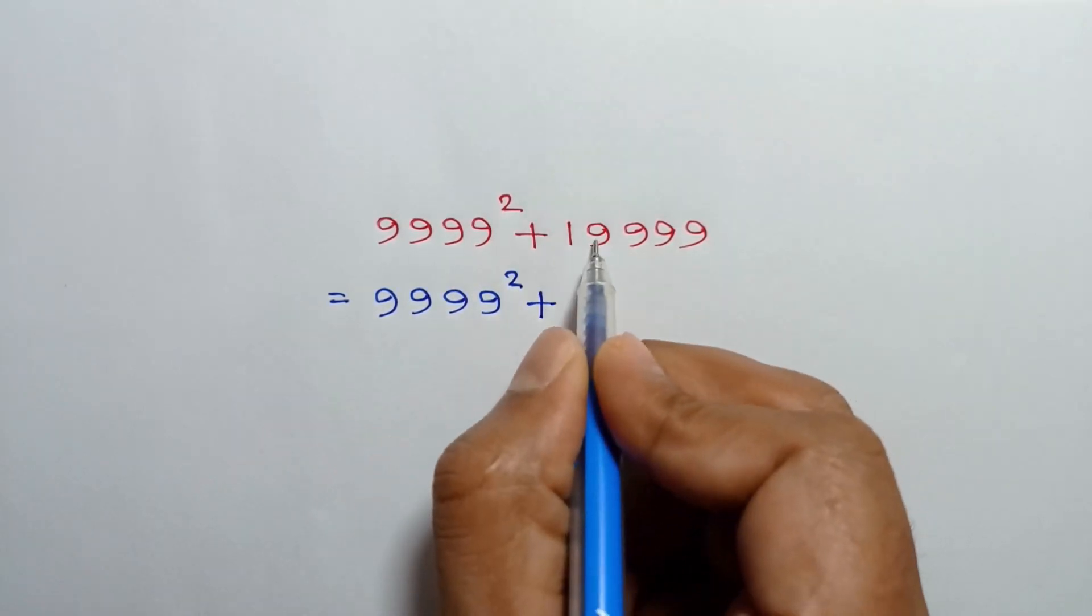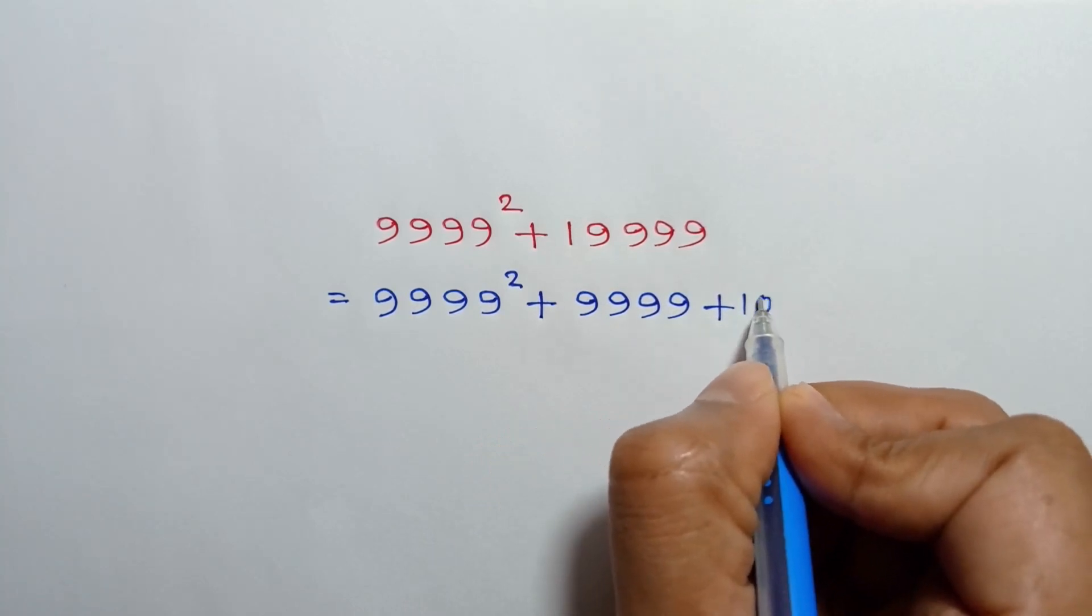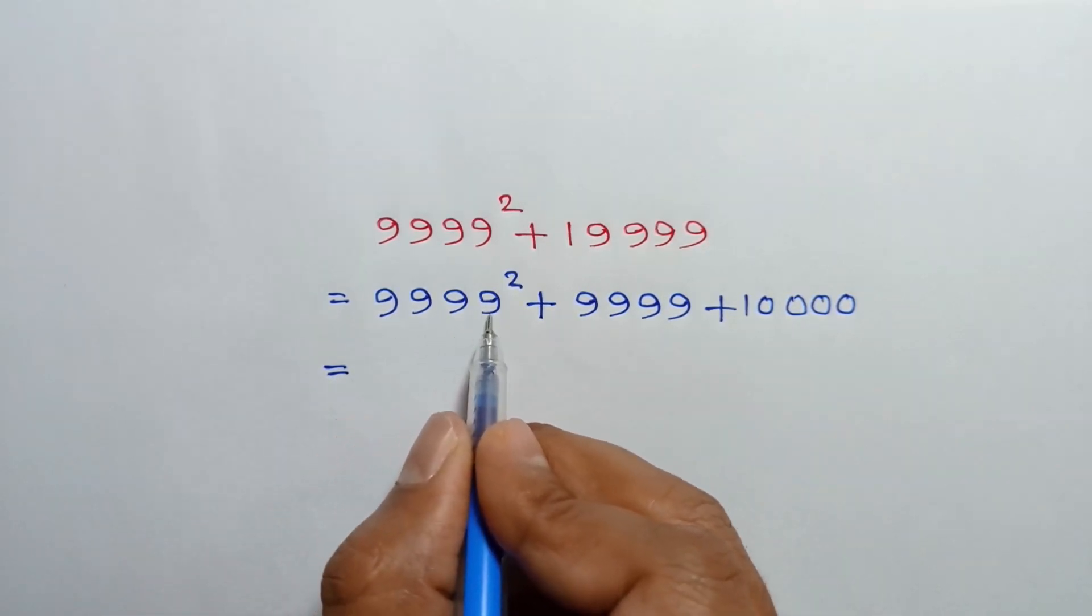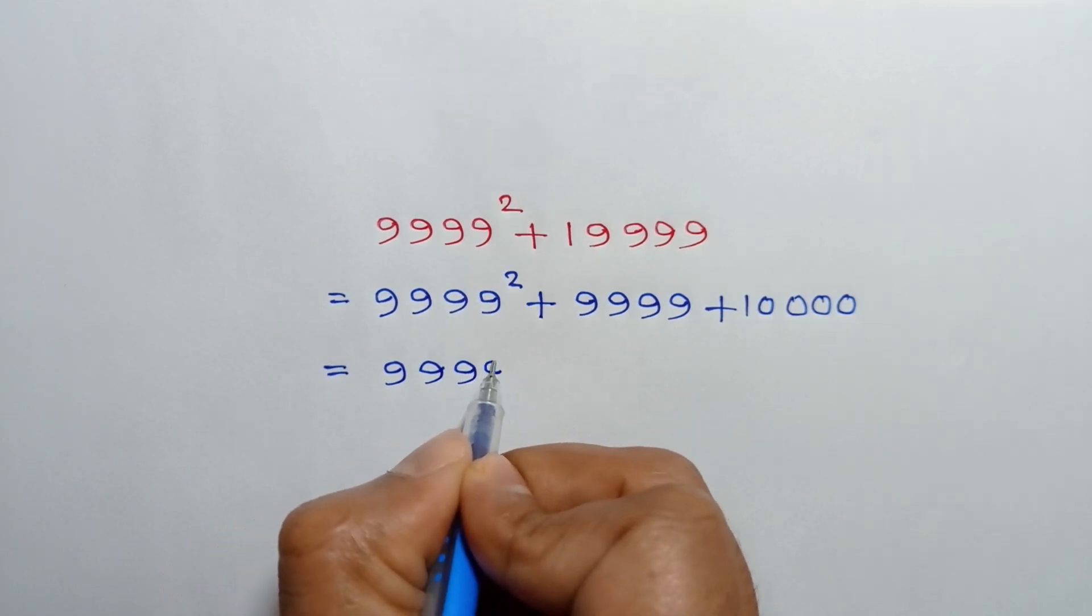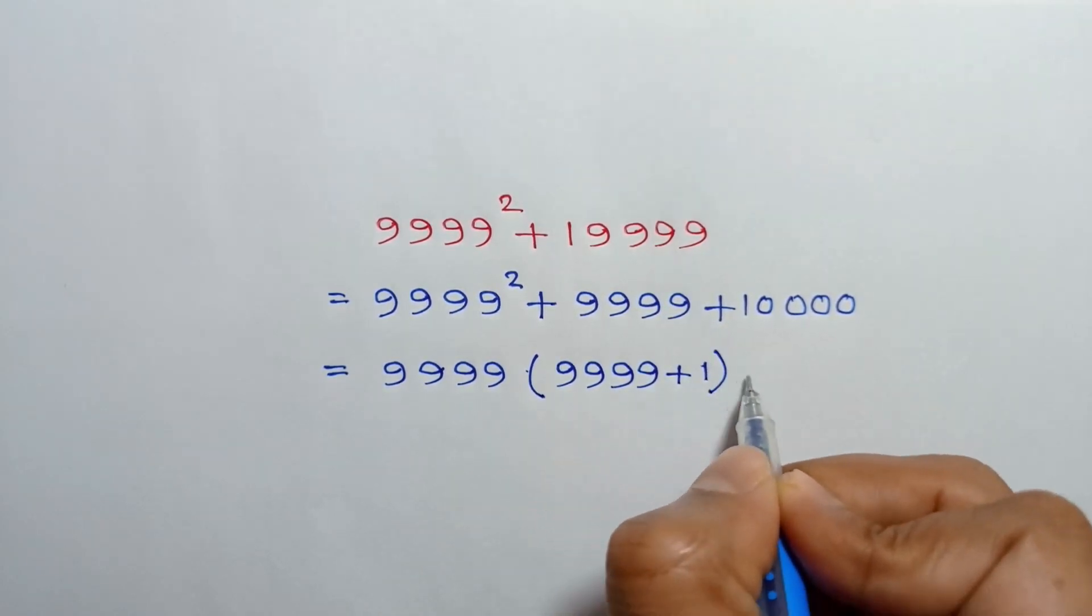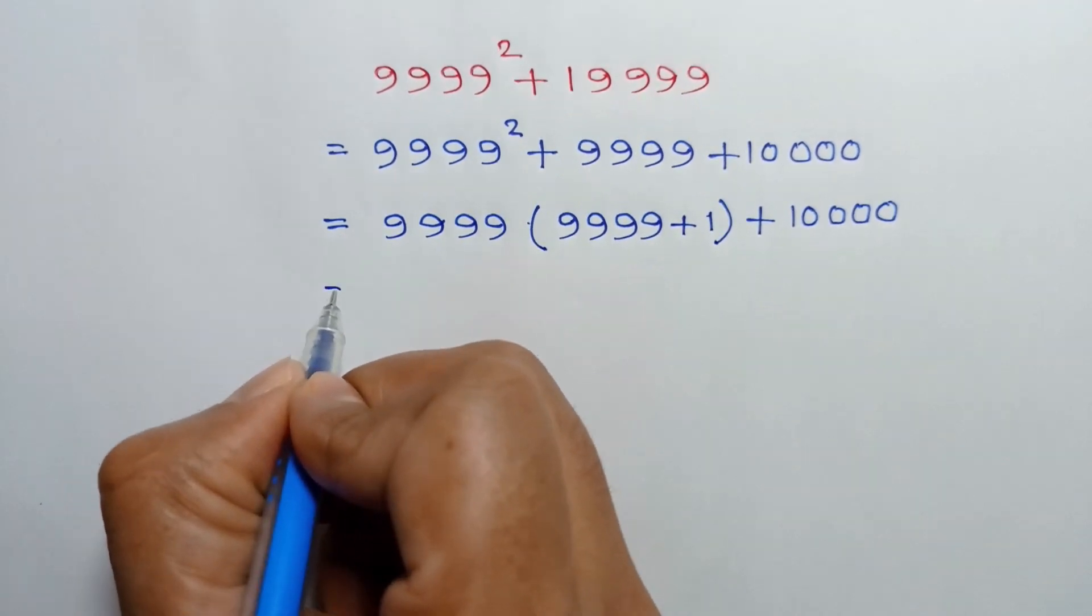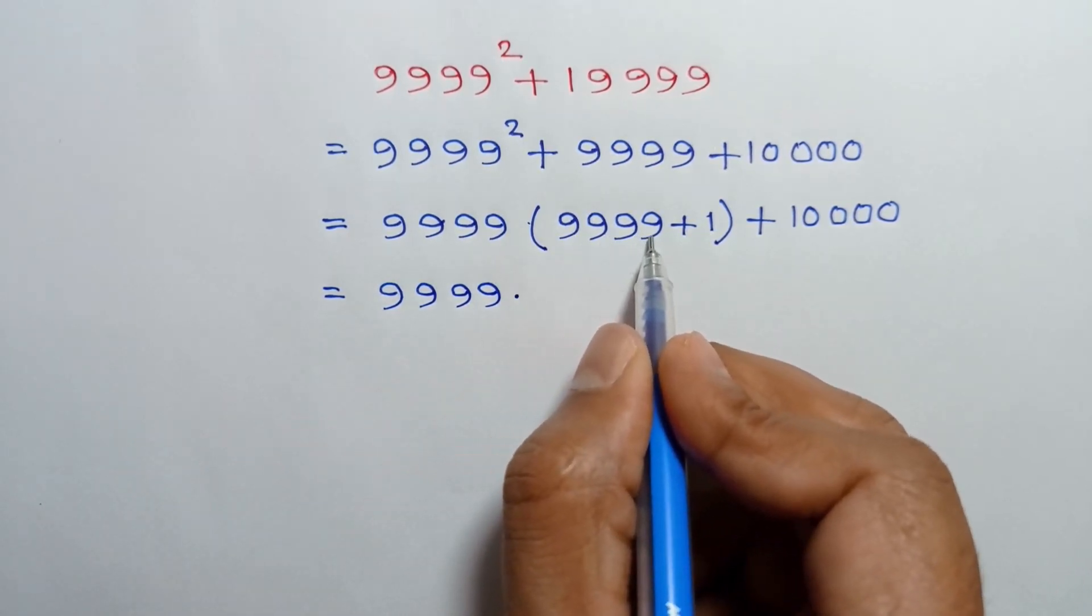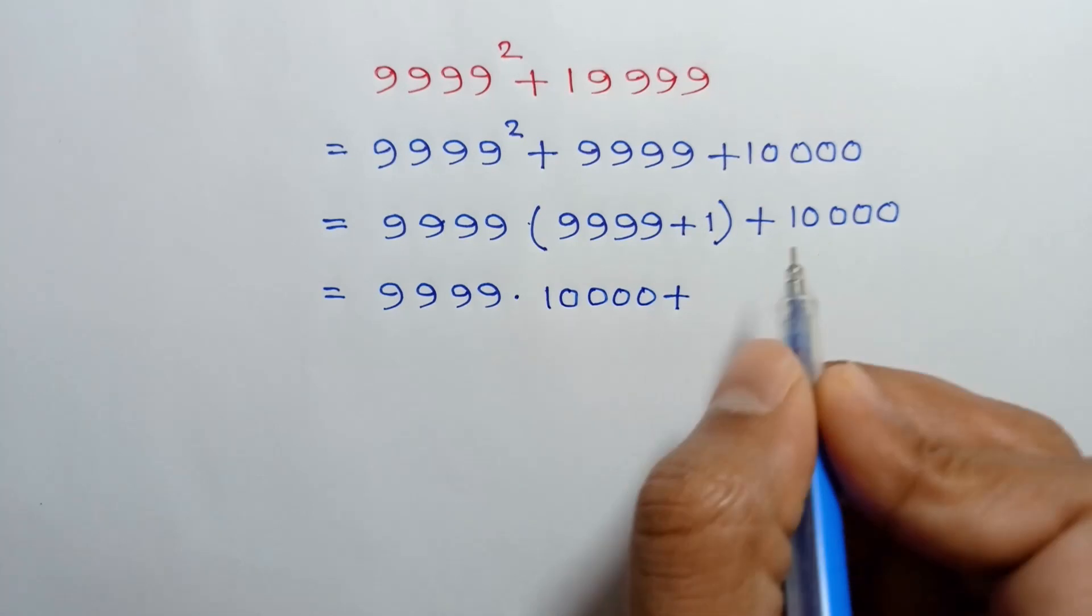This can be written as 9999² + 9999 + 10000. If we take 9999 common from the first two terms, we can write 9999 times (9999 + 1) plus 10000, which equals 9999 times 10000 plus 10000.